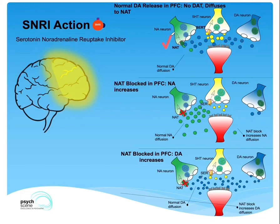Noradrenaline is broken down by NAT, which is the noradrenaline transporter. Serotonin uses the SIRT protein, which is the serotonin transporter. And dopamine is also handled by NAT.